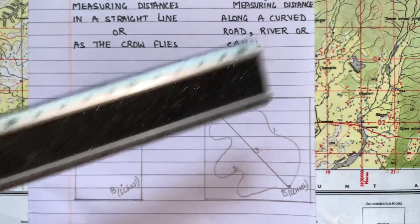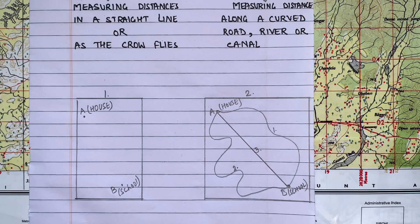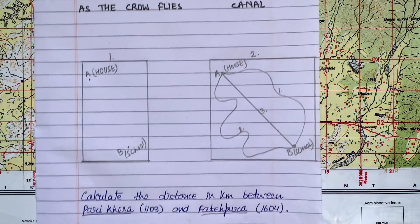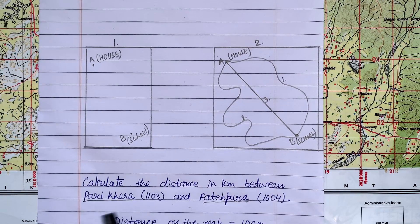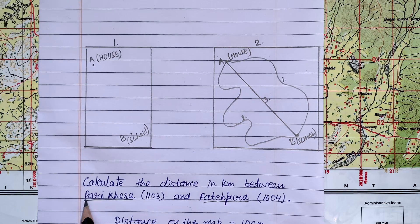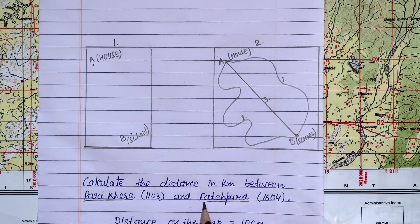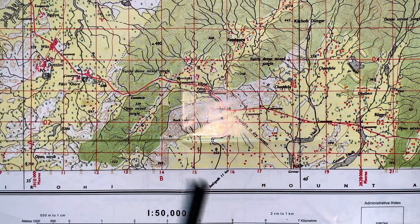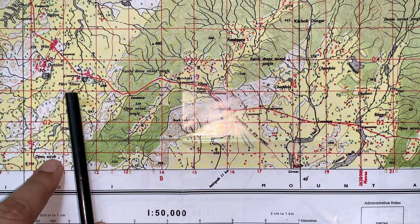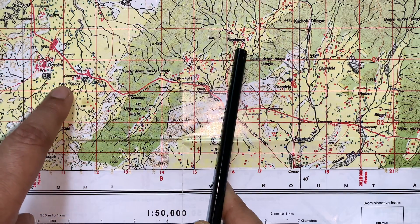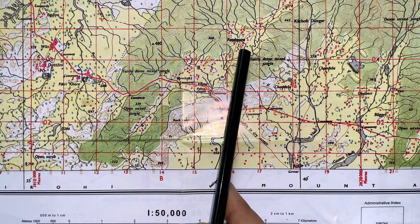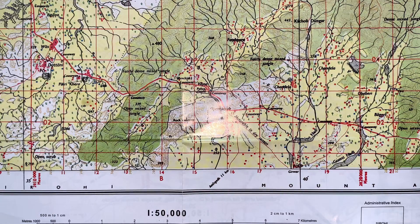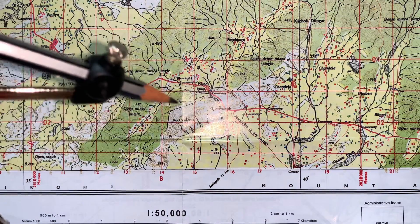Now the first question is, calculate the distance in kilometers between Parikhera and Fatehpura. So there are two names, Parikhera and Fatehpura. We will see in the map first. See here it is Parikhera and here it is Fatehpura.